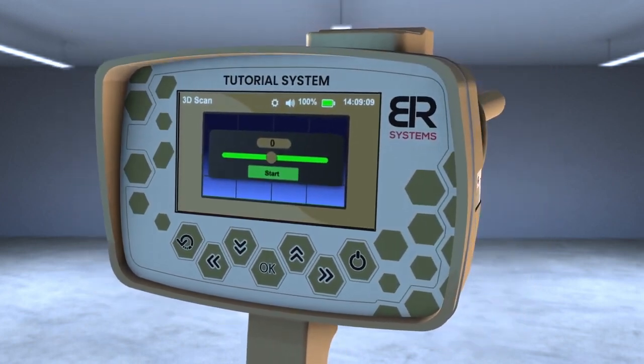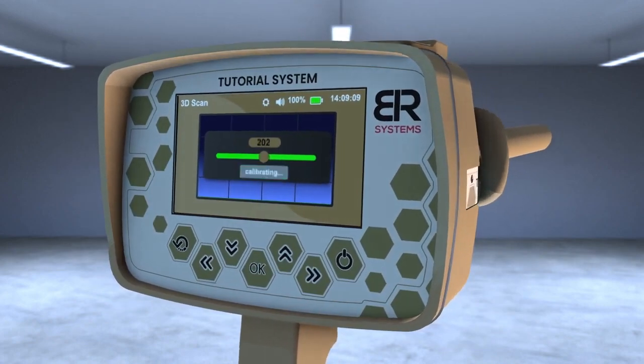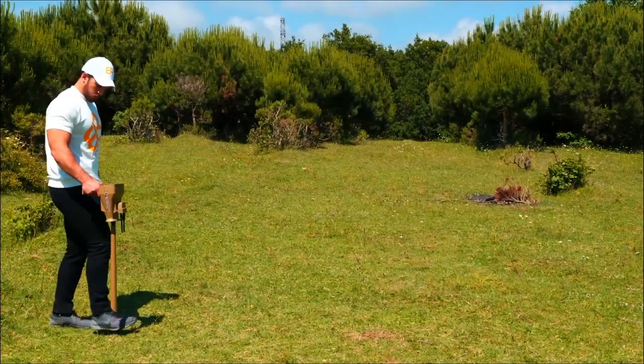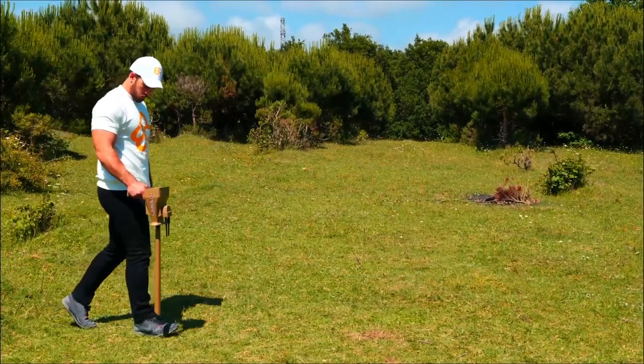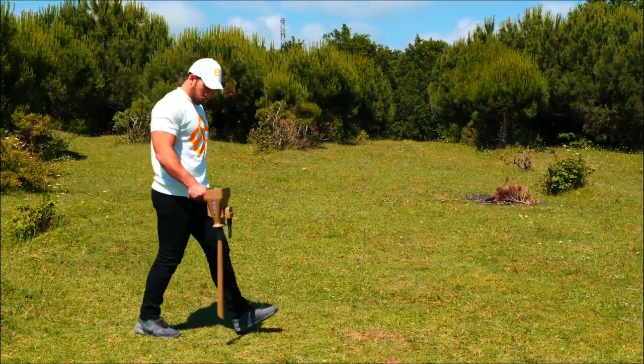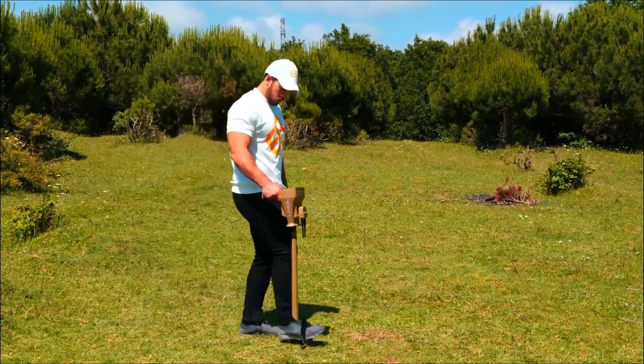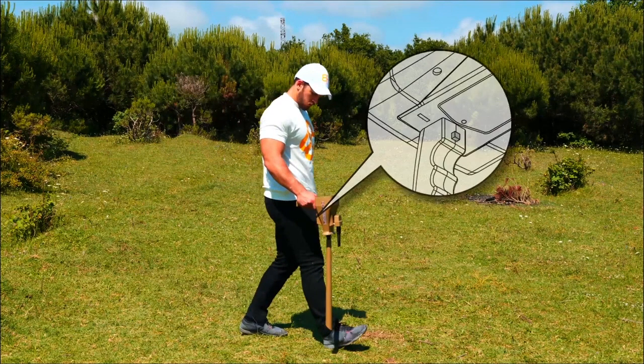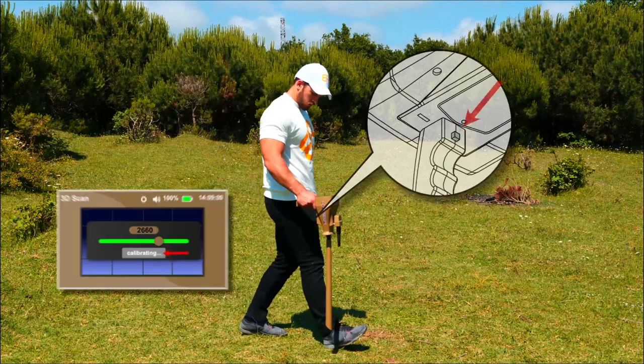The system will ask to go over the scanning area to calibrate the system. Stand over the area, point the device vertically, and move steadily in the scanning area. To start, press the grip key and wait for the message Calibrated.